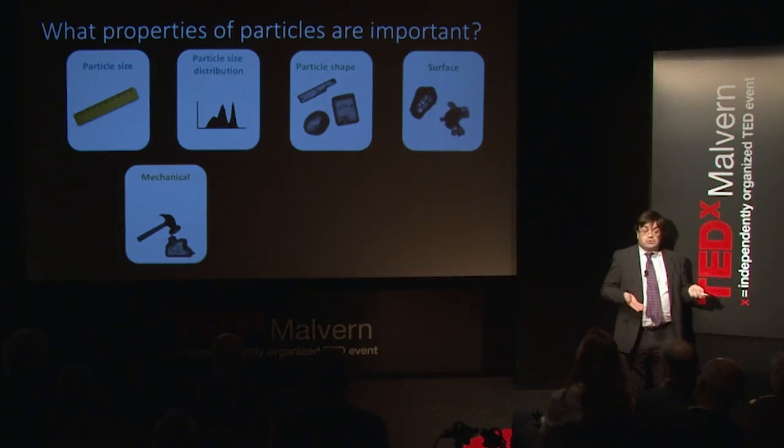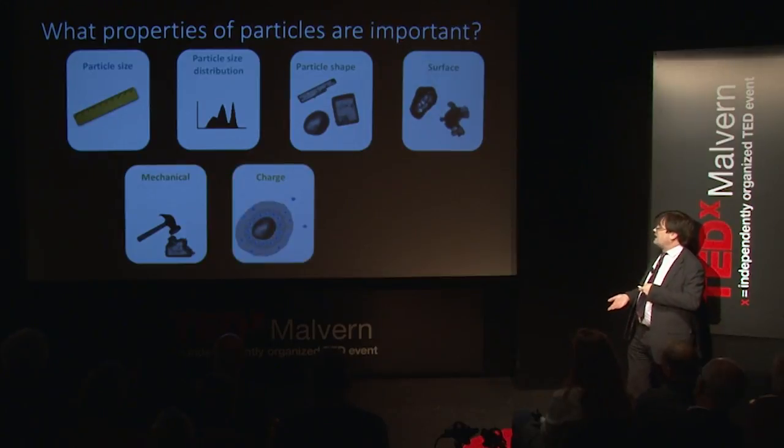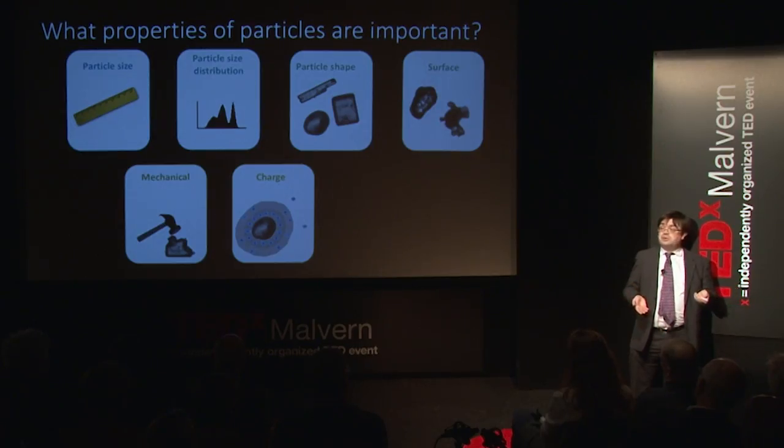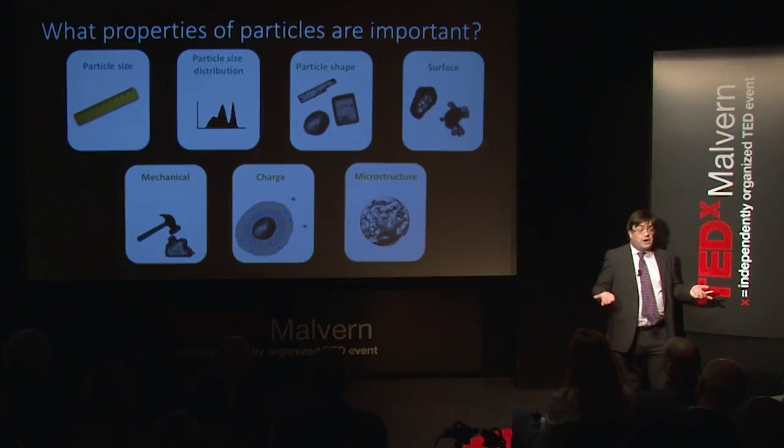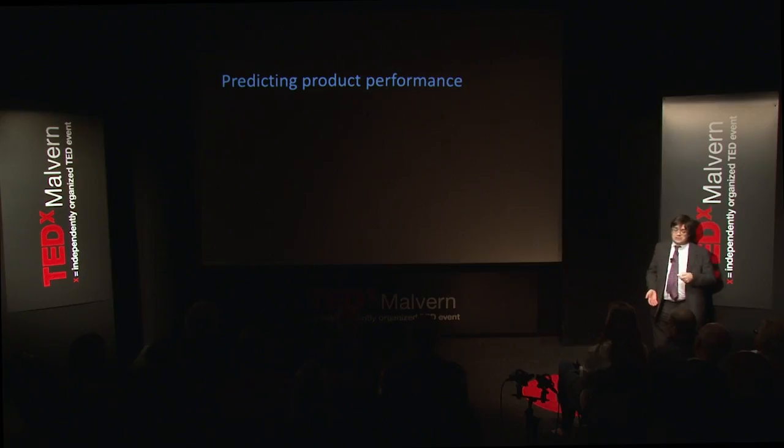How strong is it — is it going to break? Another important property is the charge on a particle. Before milk was homogenized in the 60s and 70s, when the milkman delivered milk, you'd see the cream separate to the top, because the particles were slightly bigger in size, the charge wasn't that great, and separation occurred. Or particles might be slightly hollow with some kind of structure inside. Really, we're talking about how to predict how a product is going to work.